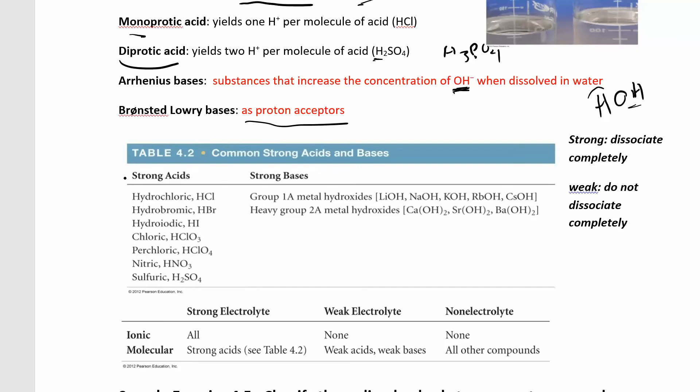So the strong acids, you're going to memorize these. These seven common strong acids: HCl, HBr, HI. I usually memorize those three together because Cl, Br, I are in the same family. And then HClO3, HClO4, and then HNO3, H2SO4. Those are the two people forget. So Cl, Br, I, ClO3, ClO4, NO3, and SO4. Those are the strong acids.